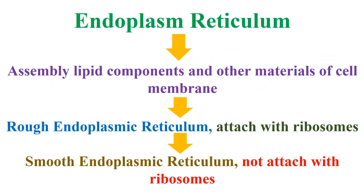Endoplasmic reticulum assembles lipid components and other materials of the cell membrane. It exists in the form of rough endoplasmic reticulum, which attaches with ribosomes, and smooth endoplasmic reticulum, which is not attached with ribosomes, as mentioned in the next slide.